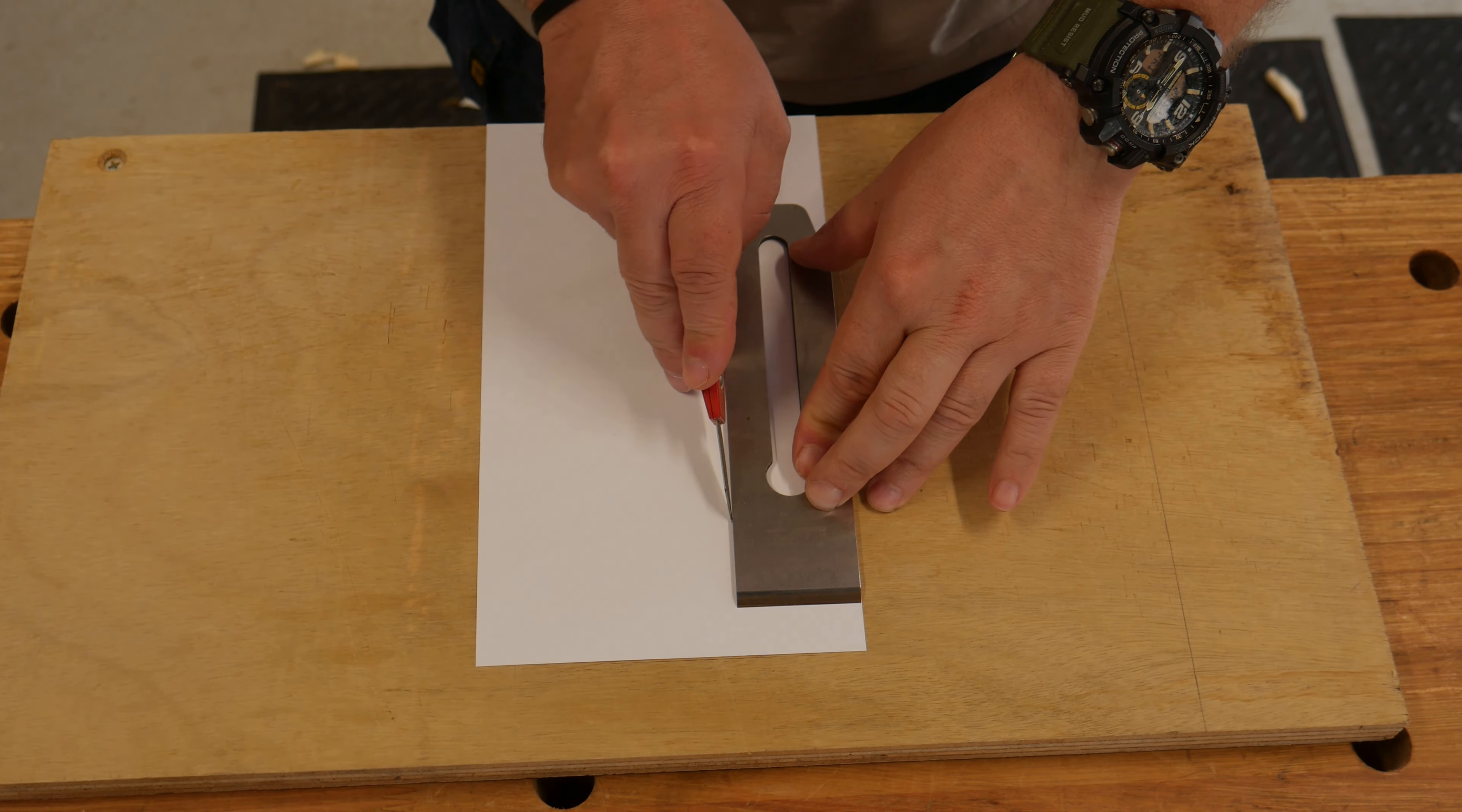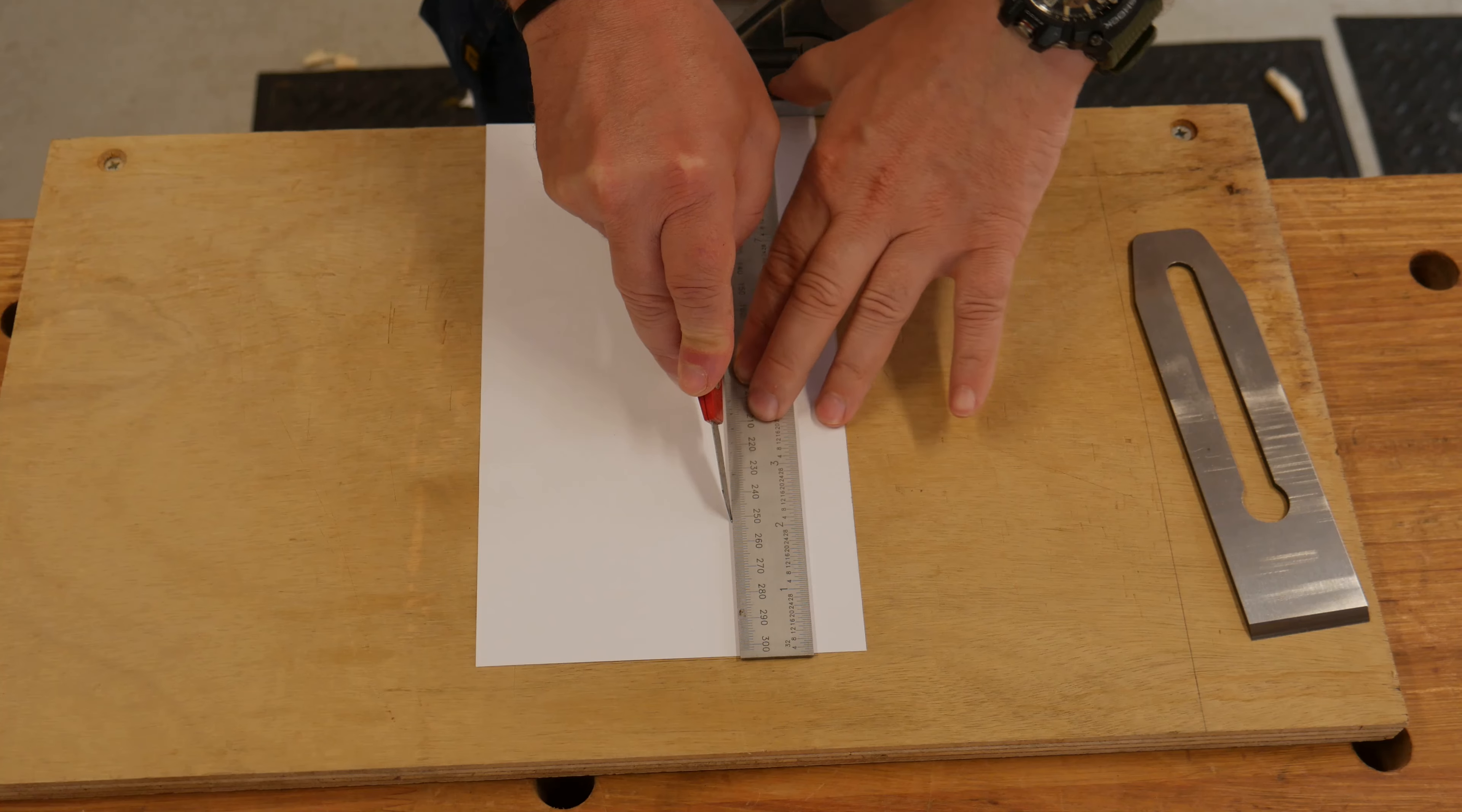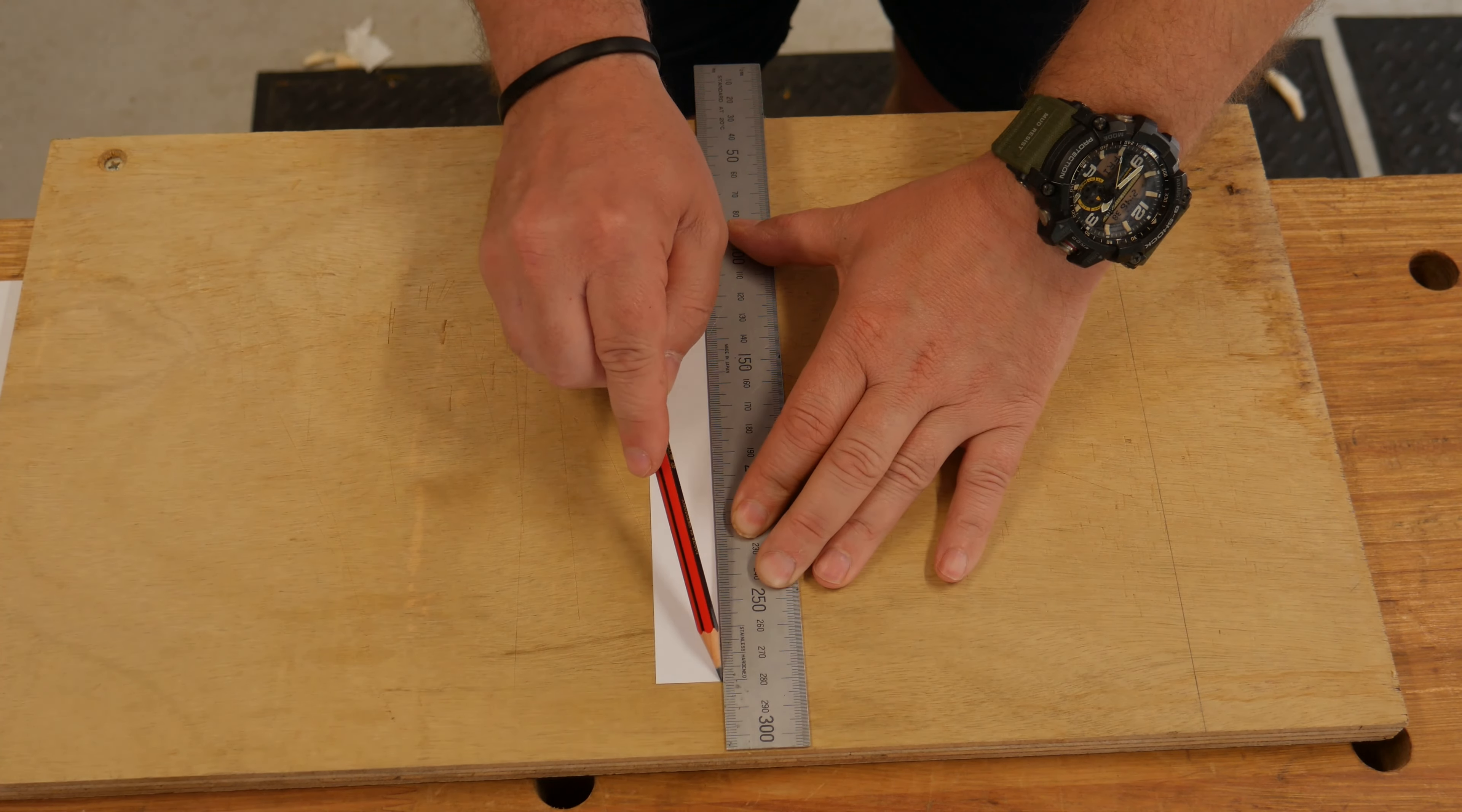The blade gets placed on some cardstock and cut to width, then a line drawn down the center. Scrub plane blades vary from a three to seven inch radius. The smaller the radius, the more aggressive the cut.